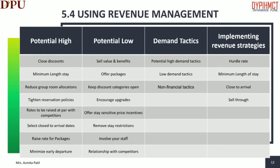Keep discount categories open — discounts are typically directed towards particular markets or particular times. During low demand periods, it is important to accept discounts to encourage business. Offer stay-sensitive price incentives: a stay-sensitive price incentive provides a discount for guests who stay longer. Remove stay restrictions so guests are not limited as to when they can arrive. This will help to maximize occupancy. Communicate this to staff as well as the Central Reservation System staff.